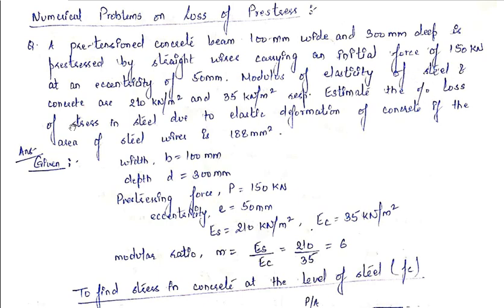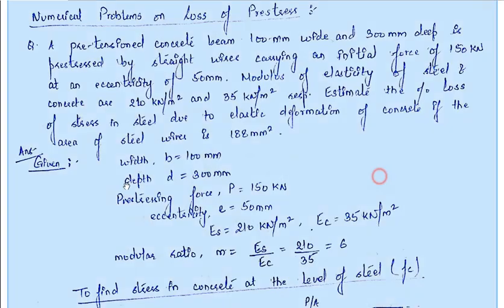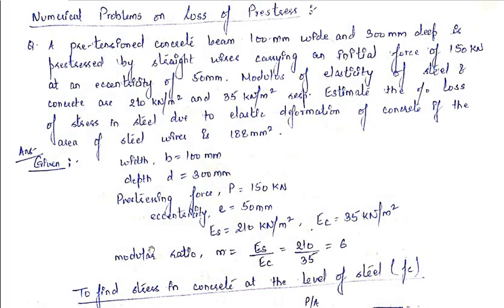In this question we have to find the percentage loss in steel due to elastic deformation. The given data: width = 100 mm, depth = 300 mm, pre-stressing force P = 150 kN, eccentricity = 50 mm, Es = 210 kN/mm² and Ec = 35 kN/mm².